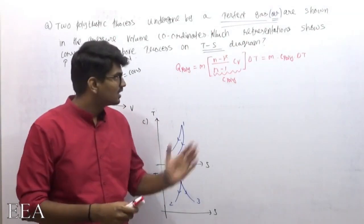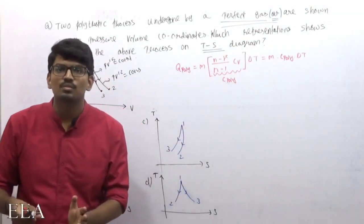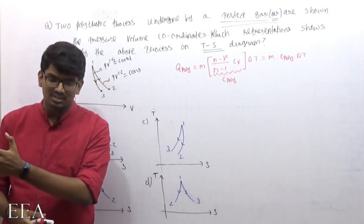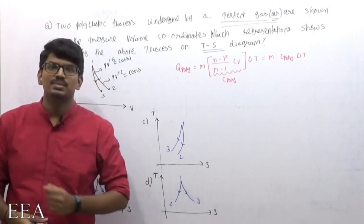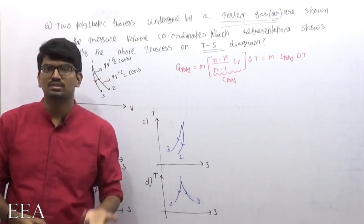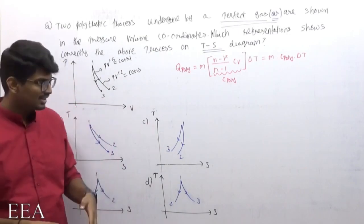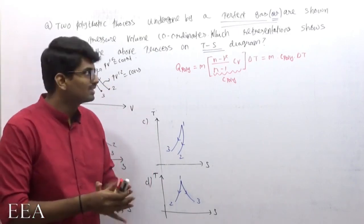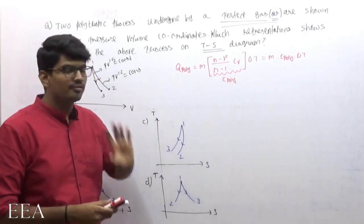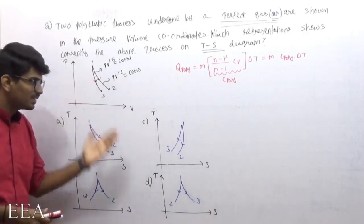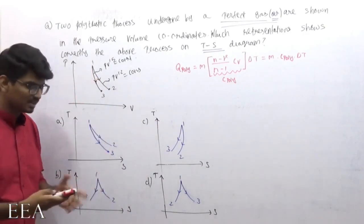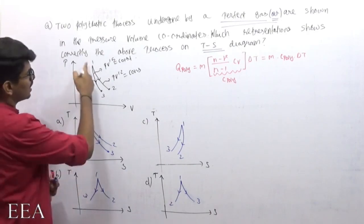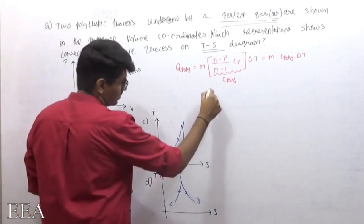We already discussed this equation when covering polytropic heat transfer in our third chapter on heat transfer, work transfer, and the first law of thermodynamics. Here, I'm going to use the c_poly formula for converting the PV diagram to a TS diagram.